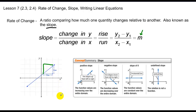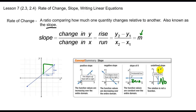A line moving up as you go from left to right has a positive slope. A line moving down as you go from left to right is a negative slope. Horizontal lines have zero slope and vertical lines have no slope. The way I always remember these: the word 'zero' — the top of the Z is horizontal — and 'no slope' or undefined slope, the letter N in 'no' is vertical, and I associate that with a vertical line.